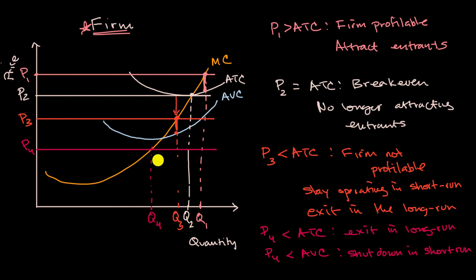So big picture, from a firm's point of view, you obviously want to be at P one where you make a profit, but you might attract entrance. At P sub two, you as a firm in the long run are neutral versus exiting the market or entering the market or other people entering the market. You're at breakeven.